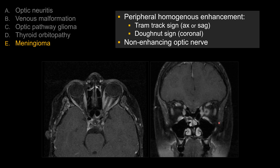The enhancement is homogeneous. You can see that the optic nerve itself is not involved — it does not enhance and is not expanded, unlike, say, glioma. So overall, the best choice here is E, optic nerve sheath meningioma.